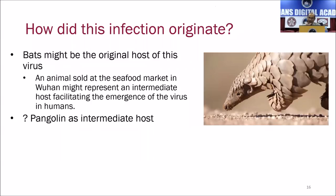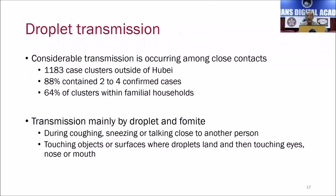Where did it originate? We believe it originated from bats. Bats have had a coronavirus that is 97% similar to human coronavirus. There is another animal known as the pangolin, which is an anteater, whose virus sequence is 99% similar to the human virus — it has only one amino acid different. So people are now trying to believe that the pangolin might have been an intermediate host. Incidentally, bats and pangolins were sold in the Wuhan market.